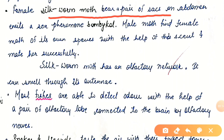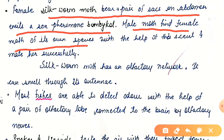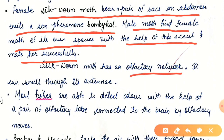The female silkworm moth bears a pair of sacs on the abdomen and emits a sex pheromone called bombicol. The male moth finds the female moth of its own species with the help of this scent and mates with her successfully. The silkworm moth has an olfactory network — it can smell through its antennae, so through the antennae it is smelling the pheromone.